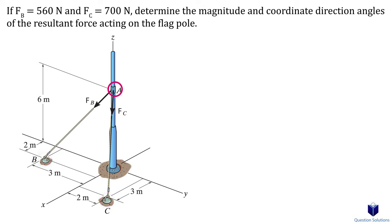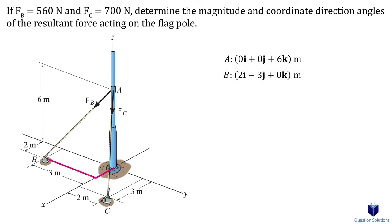We will start with point A. Point A is at the origin, so the x and y components are 0, but it's 6 meters up, which means the z component will be 6. Next, point B: it's 2 meters in the x direction, 3 meters in the negative y direction, and since it's at ground level, the z component is 0. Lastly, point C: that's 3 meters in the x direction, 2 meters in the y direction, and 0 meters in the z direction.